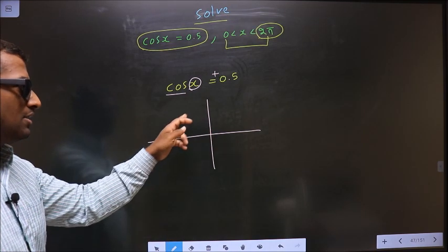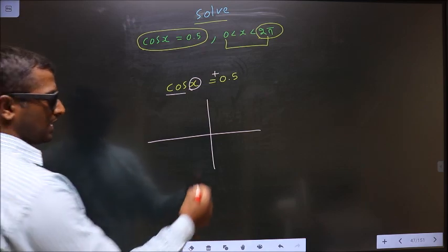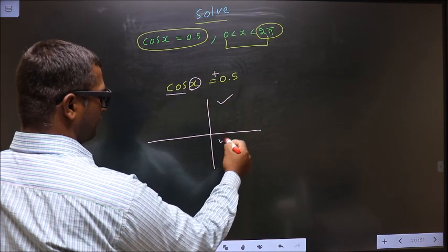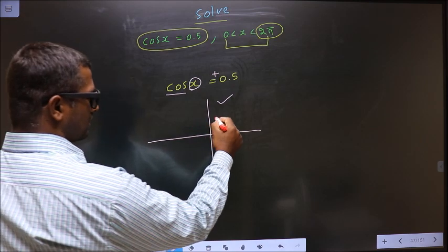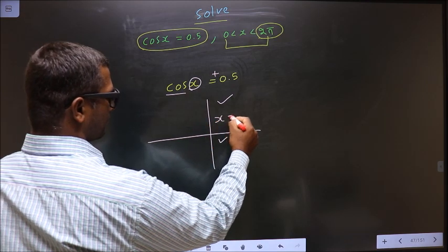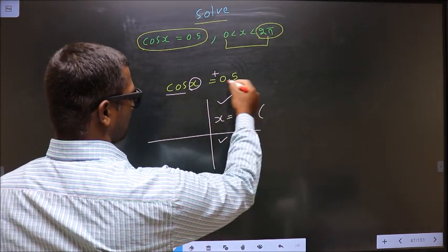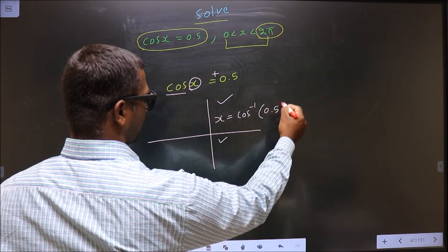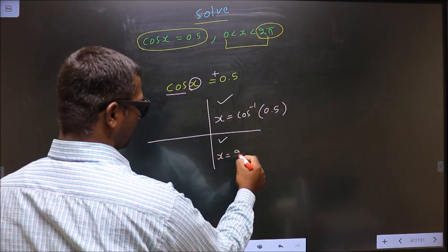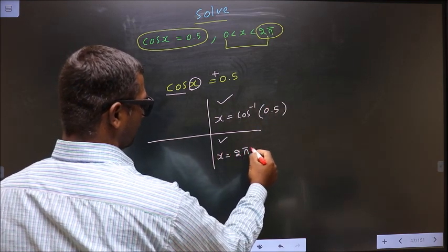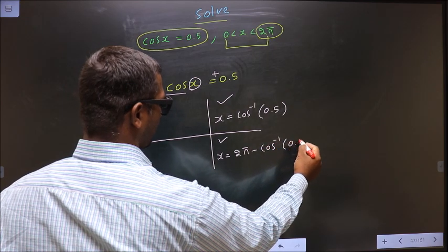Using the 'All Silver Tea Cups' rule, cos is positive in the first and fourth quadrants. To get an angle in the first quadrant, do cos inverse of 0.5 directly. To get an angle in the fourth quadrant, do 2 pi minus cos inverse of 0.5.